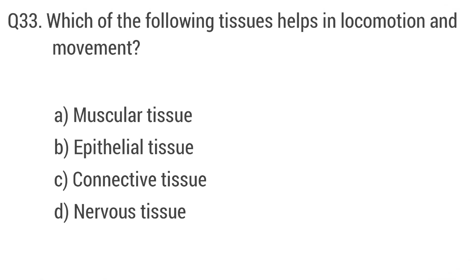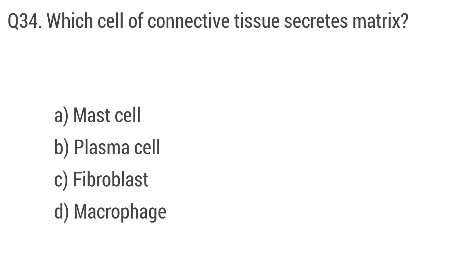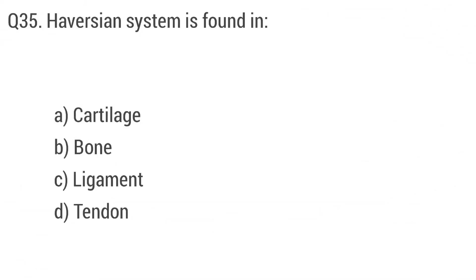Question 33: Which of the following tissue helps in locomotion and movement? The right answer is option A: muscular tissue. Question 34: Which cell of connective tissue secretes matrix? The right answer is option C: fibroblast.